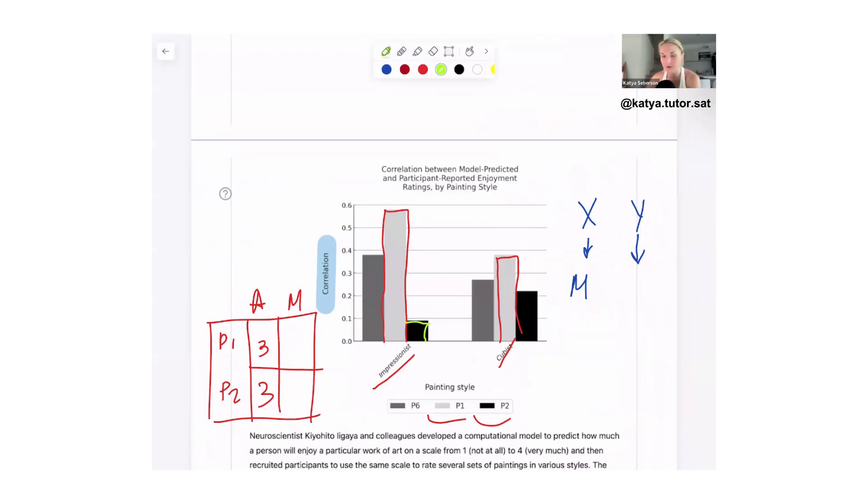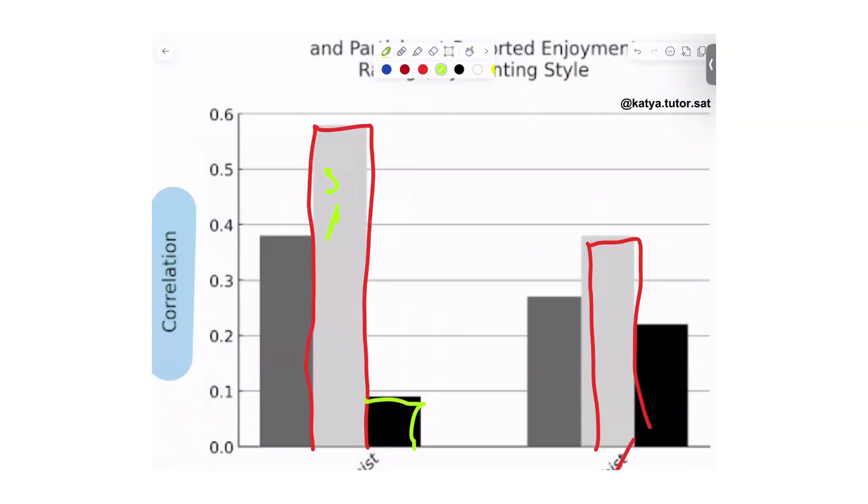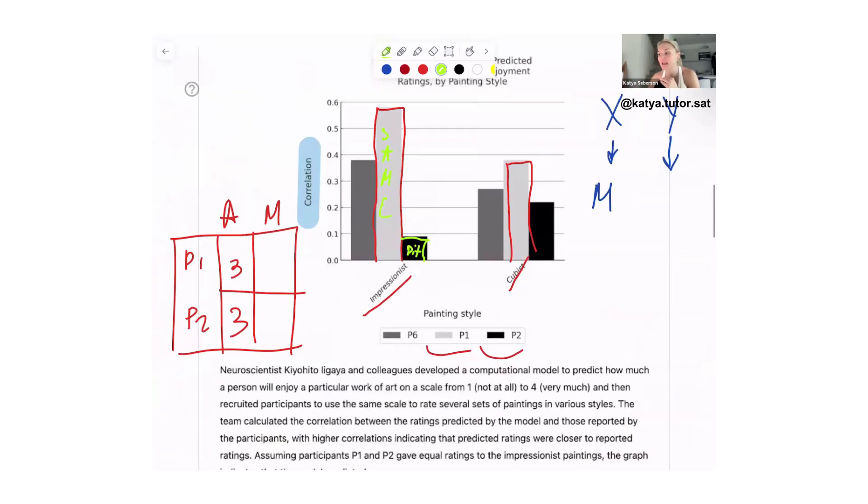And this means that the prediction was quite far away from the actual. We don't know what the actual and what the prediction was, we just know that their relationship was very - it's not negative but it was very small. So this we could say was similar or same, and this one was different. But we cannot say that participant two enjoyed the impressionist painting less than he enjoyed the cubist painting. The only thing we can say here is that the correlation or the relationship between the actual score and the predicted score was stronger for the cubist painting. Oh okay, I love that sound!